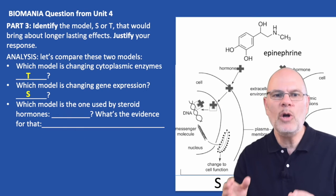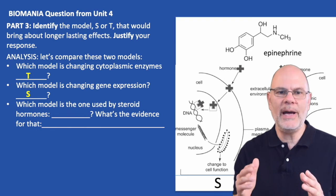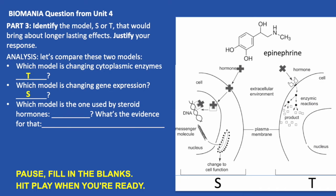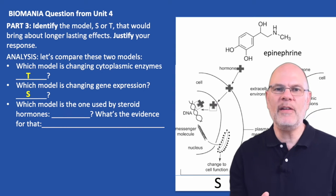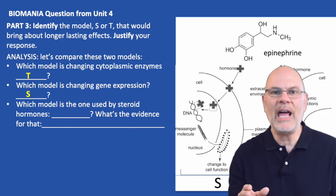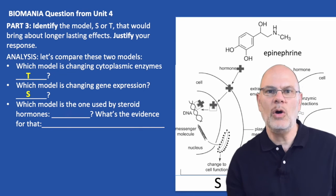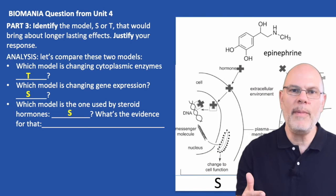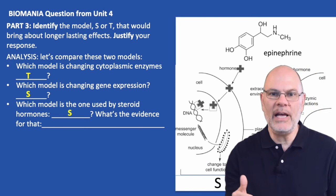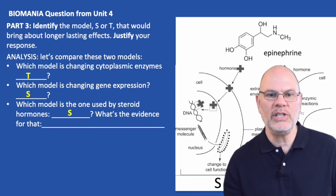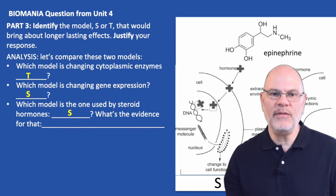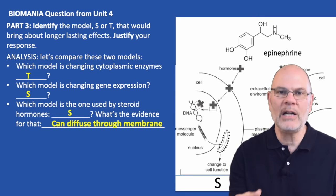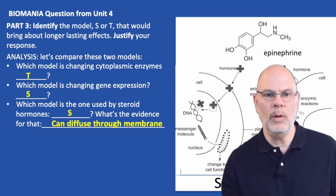Now let's look at which model is the one that's used by steroid hormones and what's the evidence for that. We have to remember a little bit of biochemistry: steroids are lipids. Like dissolves like. So steroid hormones are able to diffuse through the membrane and enter into the cytoplasm where they bind with the cytoplasmic receptor. The evidence for that is the fact that this hormone is actually diffusing through the membrane, which is what you'd expect from a lipid steroid hormone.